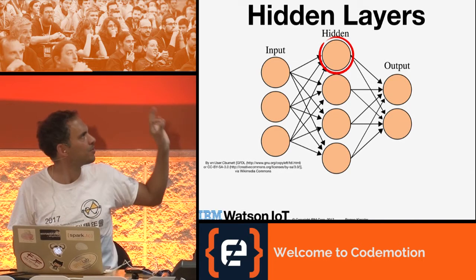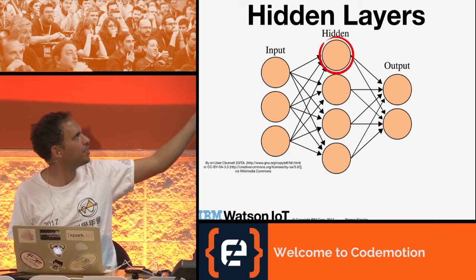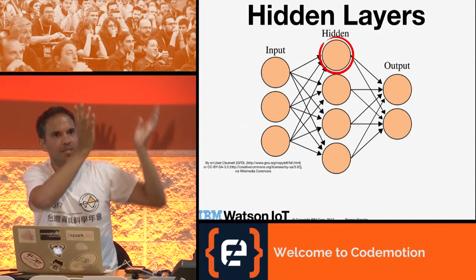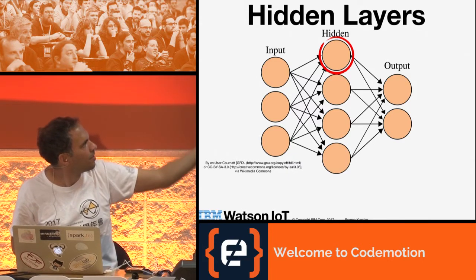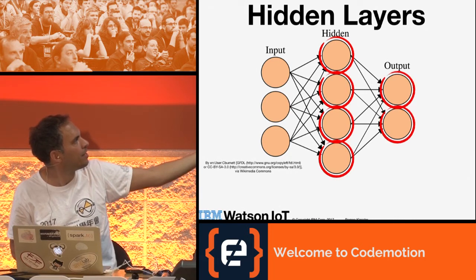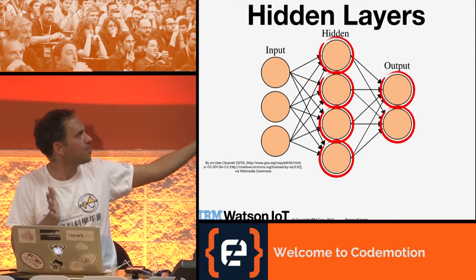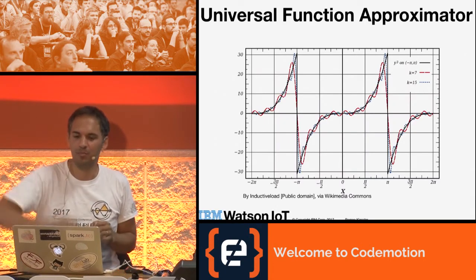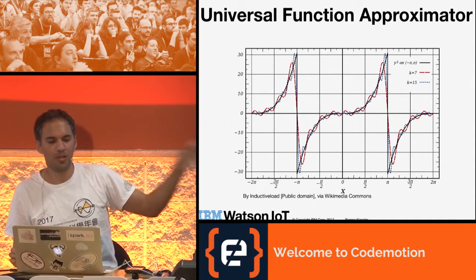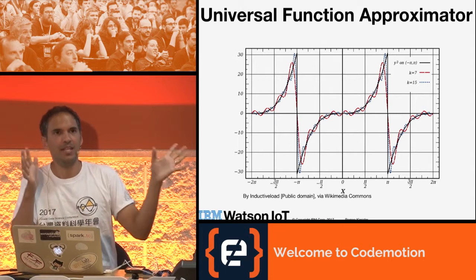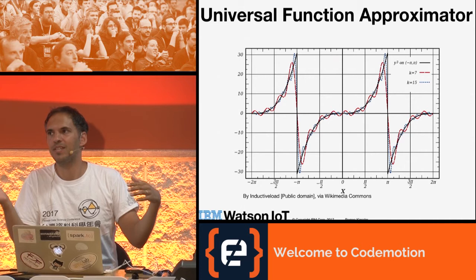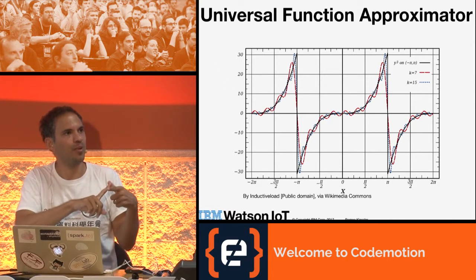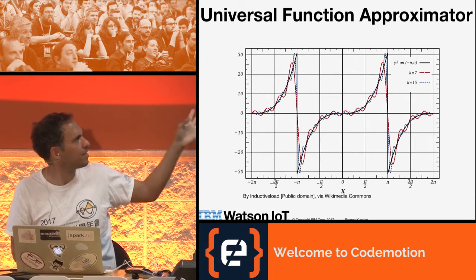If you've understood how one single neuron is computed, it's relatively easy to understand a whole artificial neural network. This computation takes place for each and every neuron — we add the weights, sum up, activate, and send the output downstream. This is the most simple neural network because it has only one hidden layer, and that's sufficient for most cases. A single hidden-layer neural network is a so-called universal function approximator — it can represent any mathematical function, you just need enough data and compute power.